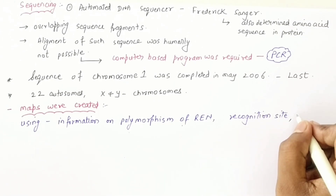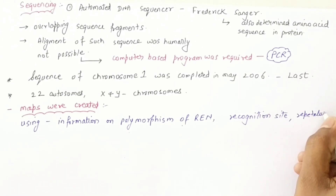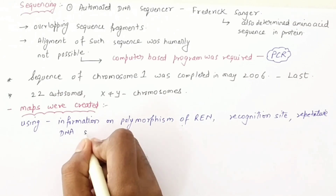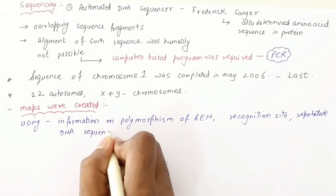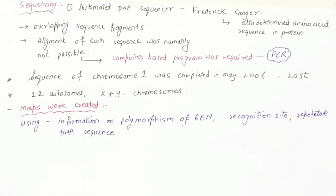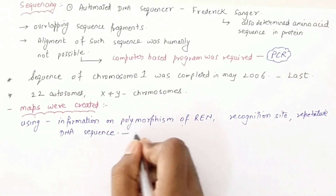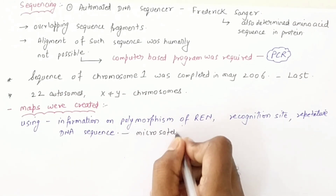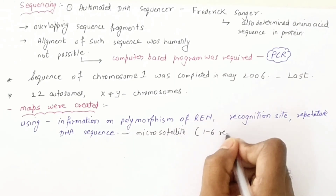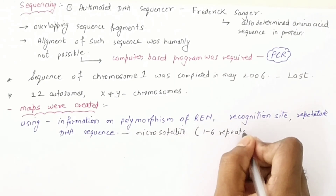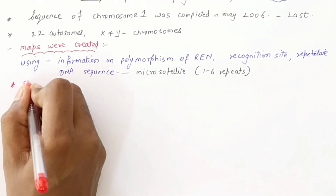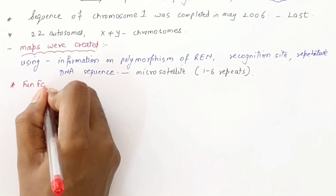Restriction Endonuclease Recognition Sites were used, along with Repetitive DNA Sequences. The repetitive DNA sequences that repeat were called microsatellites, consisting of one to six nucleotide base pairs repeated multiple times.